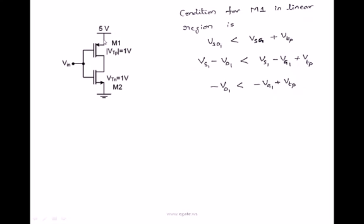So Vs1 is nothing but source of M1 transistor, that is 5V. And Vg1 is nothing but V input, this is the point. V input is nothing but Vg1. Vd1, drain of M1 transistor, is nothing but this one, which is nothing but V0.